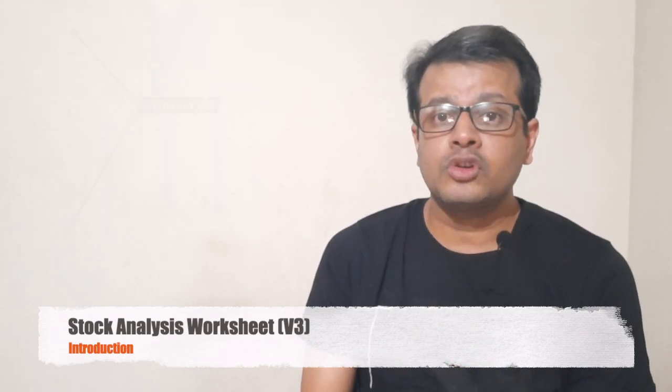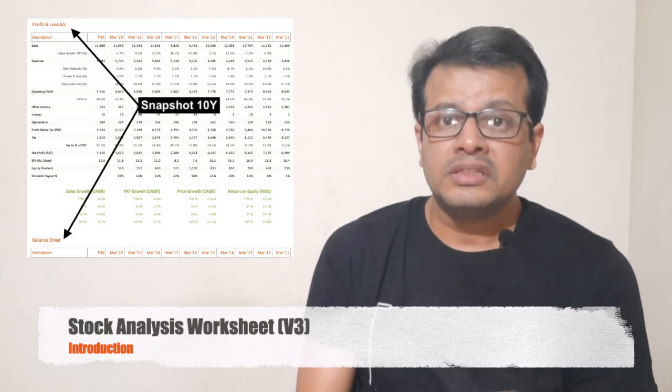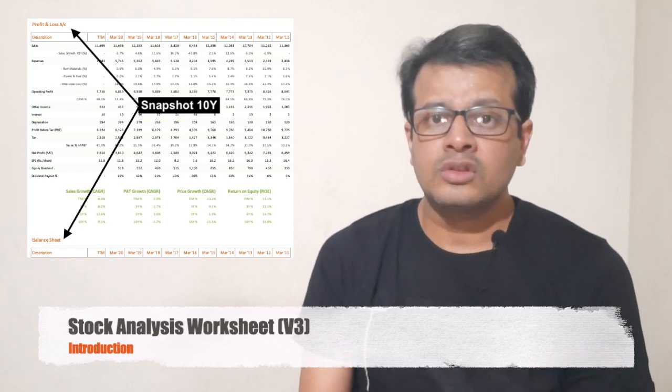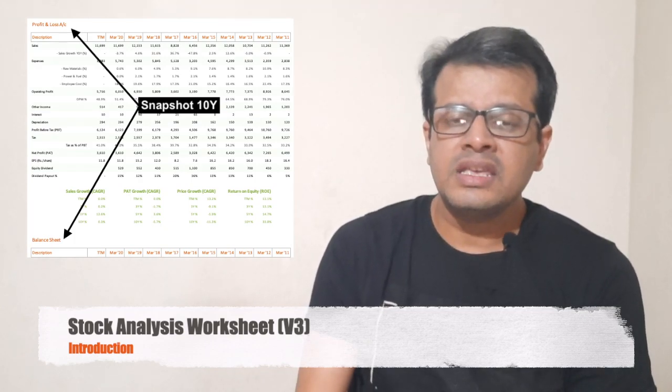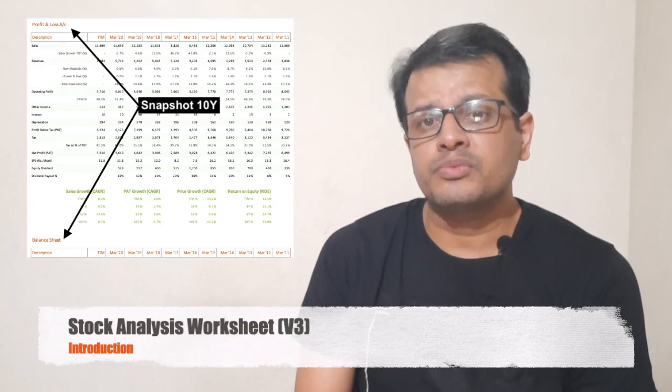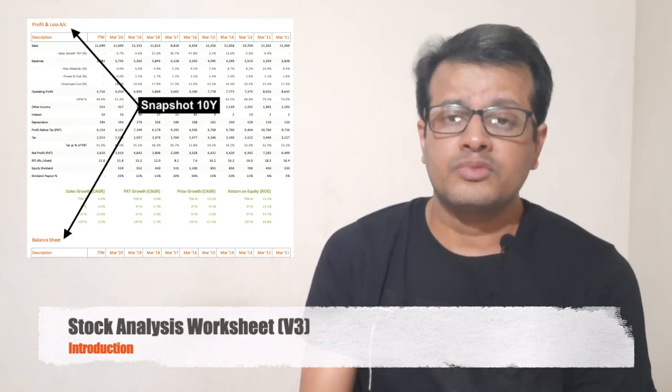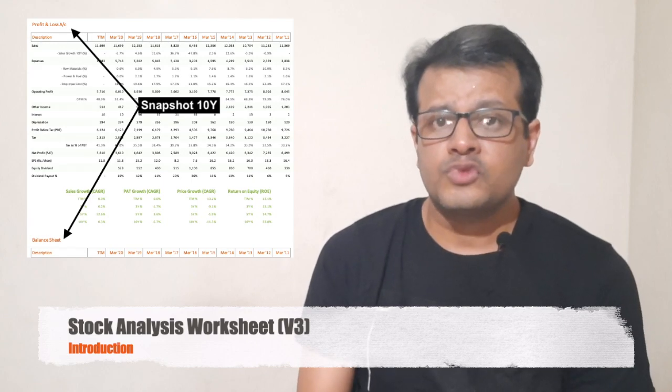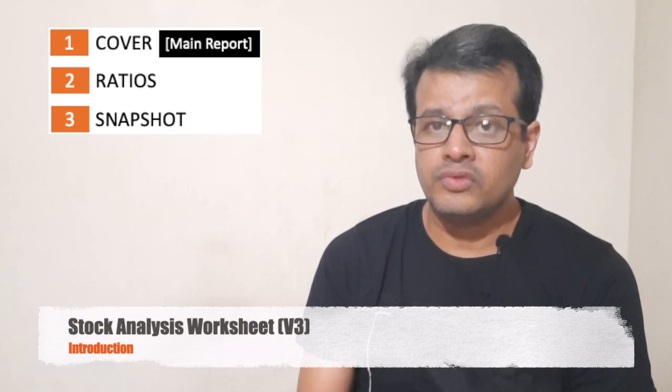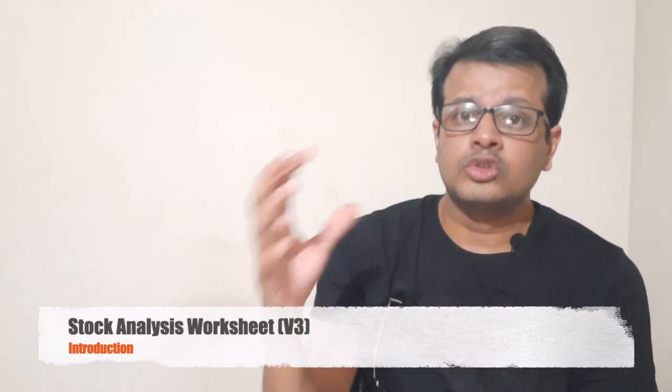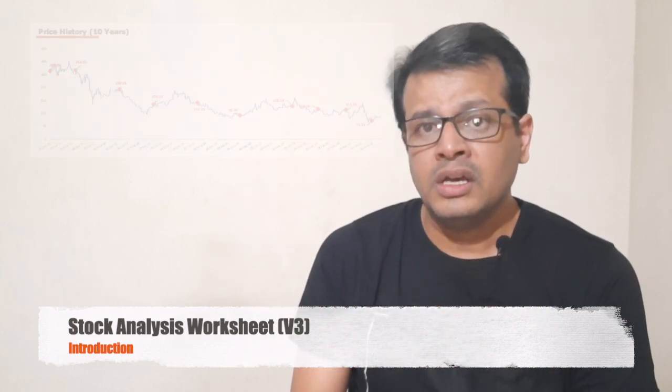There is also a snapshot sheet. This is one of my favorite sheets because it gives the last 10 years performance of the company at a glance. So just by looking at this sheet I can see how this company has performed in last 10 years in terms of sales, in terms of net profit, in terms of net worth. The cover sheet is the main sheet which gives the intrinsic value and it also shows a nice price chart, last 10 years price chart for the company.